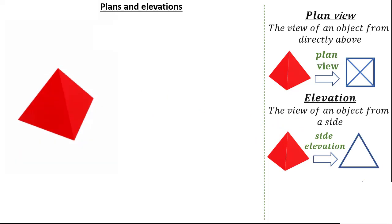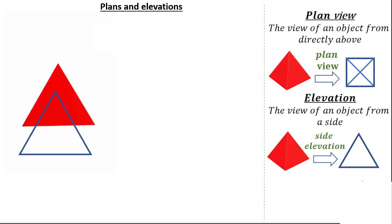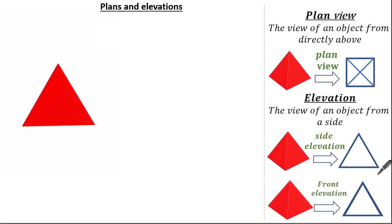Let's have a look at our pyramid again. Imagine if you were standing directly in front of it — what would you see? You'd see this two-dimensional image, which represents the front elevation. So in summary: the plan view, the side elevation, and the front elevation are the images you would see if you were standing directly above, to the side of, or in front of the shape.